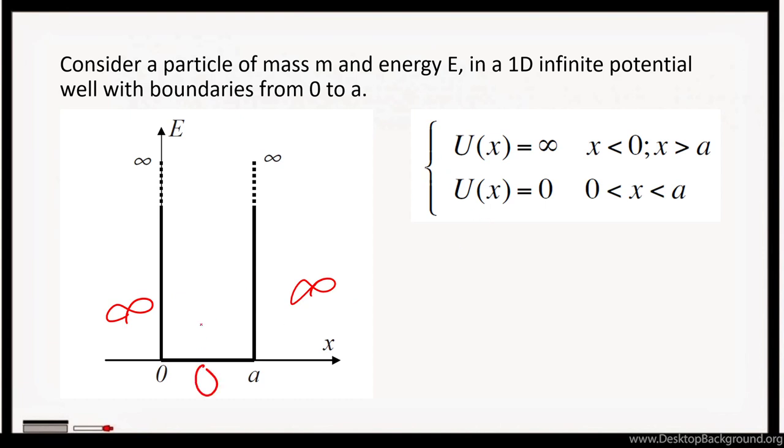The particle can only exist here inside. It cannot go out past 0 or past a. And due to these potentials, we can get the Schrödinger equations for each of these cases.